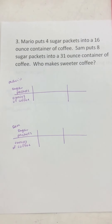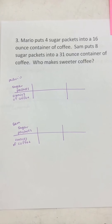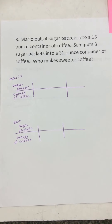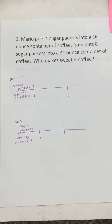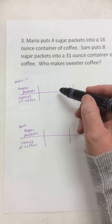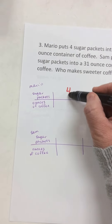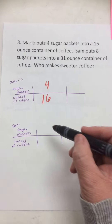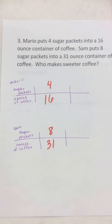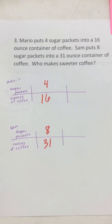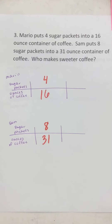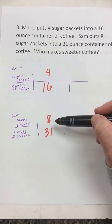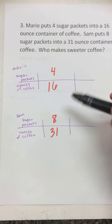Number three: Mario puts four sugar packets into a 16-ounce container of coffee. Sam puts eight sugar packets into a 31-ounce container of coffee. Who makes sweeter coffee? Mario puts four sugar packets into 16 ounces, and Sam puts eight sugar packets into 31 ounces. To compare this, I do see a pattern between the four and the eight — Sam uses twice as many sugar packets for a certain amount of coffee.